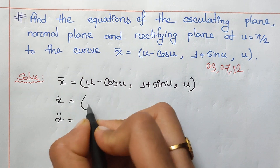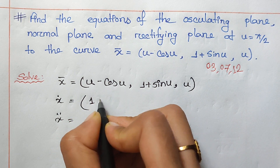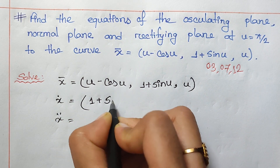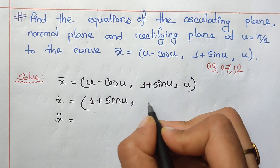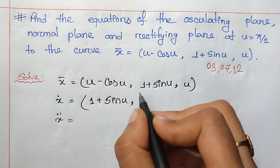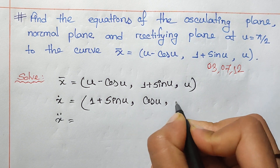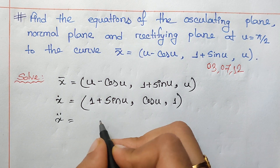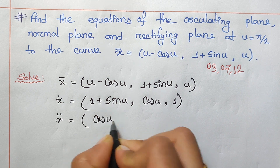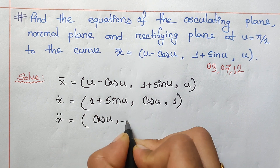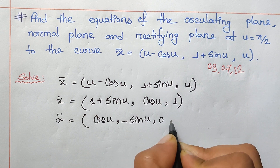So x double dot: the derivative of 1 is cos minus, plus sin u. 1 plus this is 0, 1 is 0. Sin is because u, and u is 1. So the derivative of 1: sin is because u, cos is minus sin u, 0.